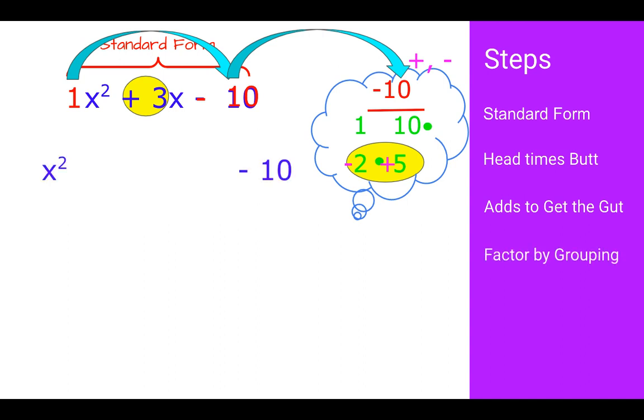When we factor by grouping, we start by breaking up the middle term. This 3x can be written as negative 2x plus 5x, or 5x minus 2x. It doesn't matter. Grouping those four terms into two sets of two and dividing them in half. For my first set, x squared and negative 2x share an x. And what's left over is x minus 2, because x times x is x squared, and x times negative 2 is negative 2x.